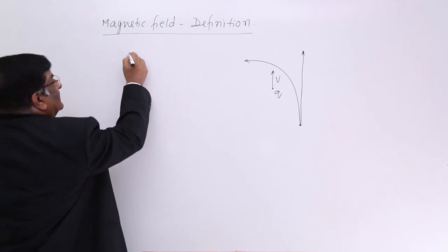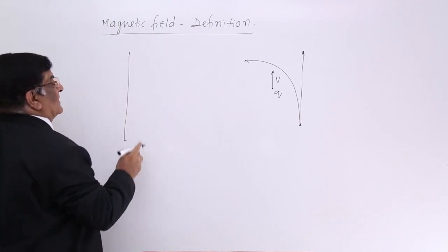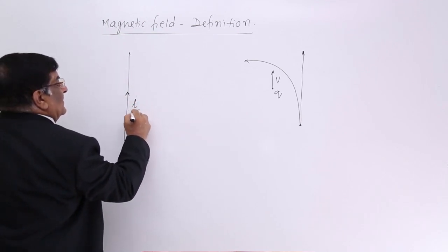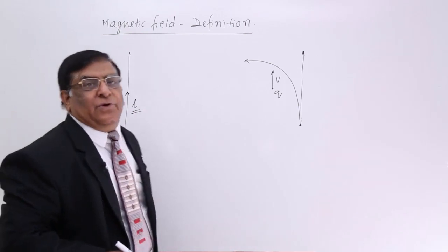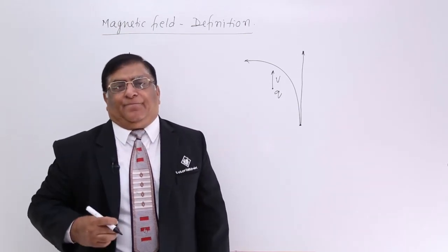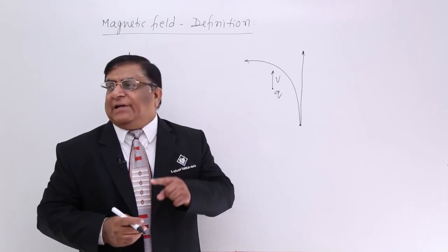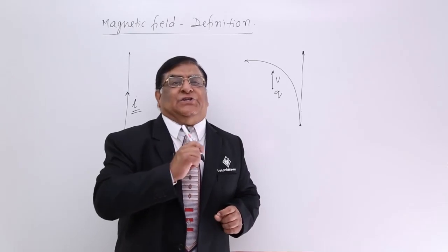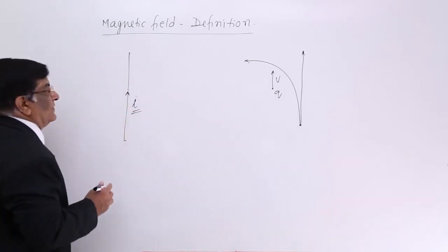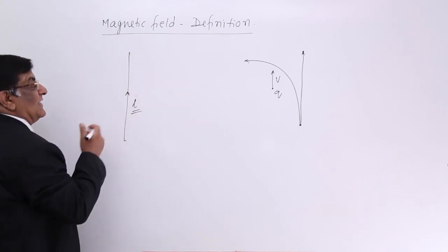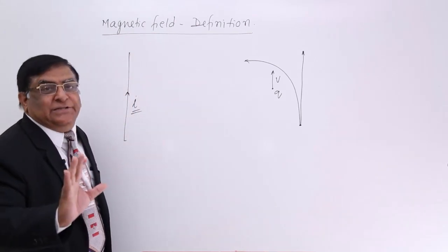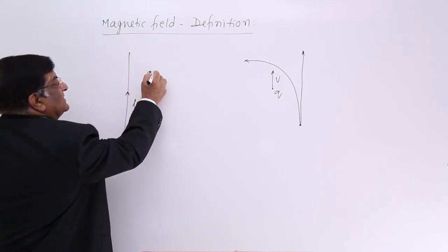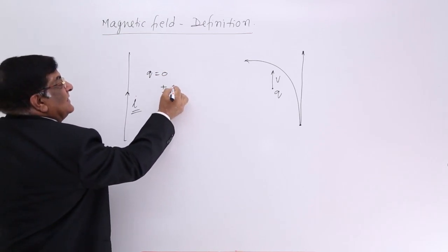This is a conductor — an infinitely long conductor — and in this conductor charges are flowing, or we can say current is flowing. Now one thing I want to make clear: you should always remember what is the net charge of a conductor in which current is flowing. The net charge of a conductor is zero. You might say the electrons are moving so it is a charged body — no, it is not, because the net charge is zero since positive and negative charges are equal.